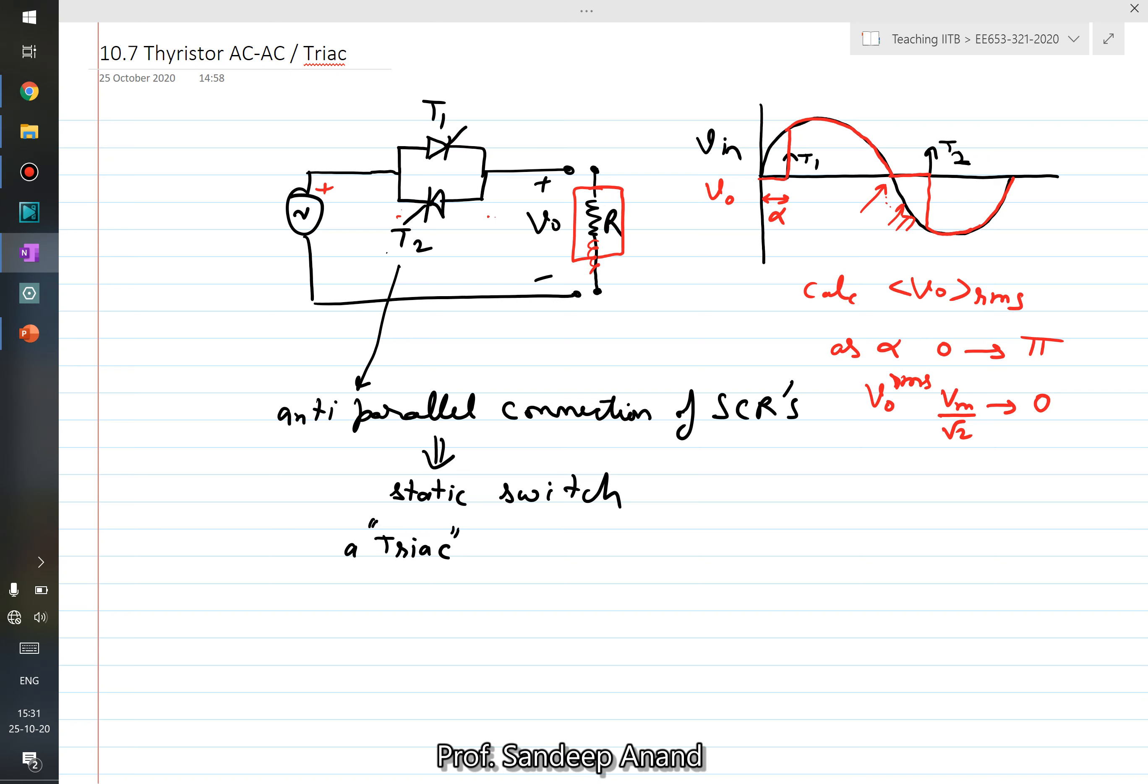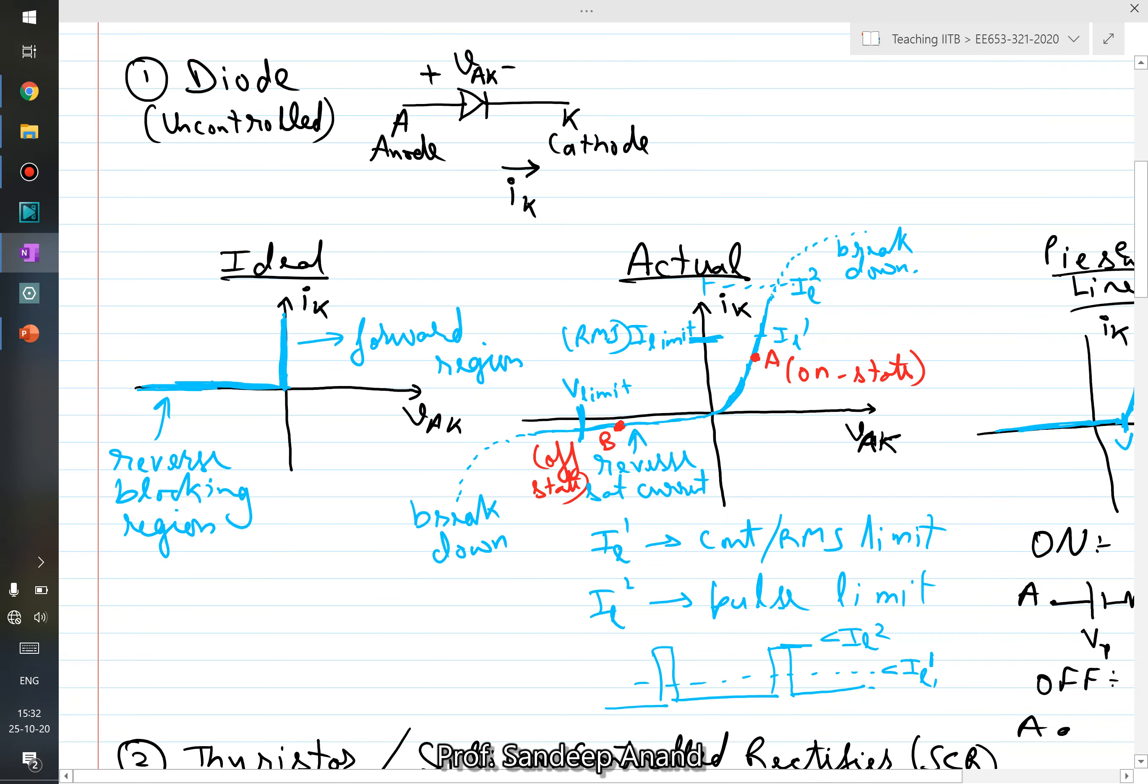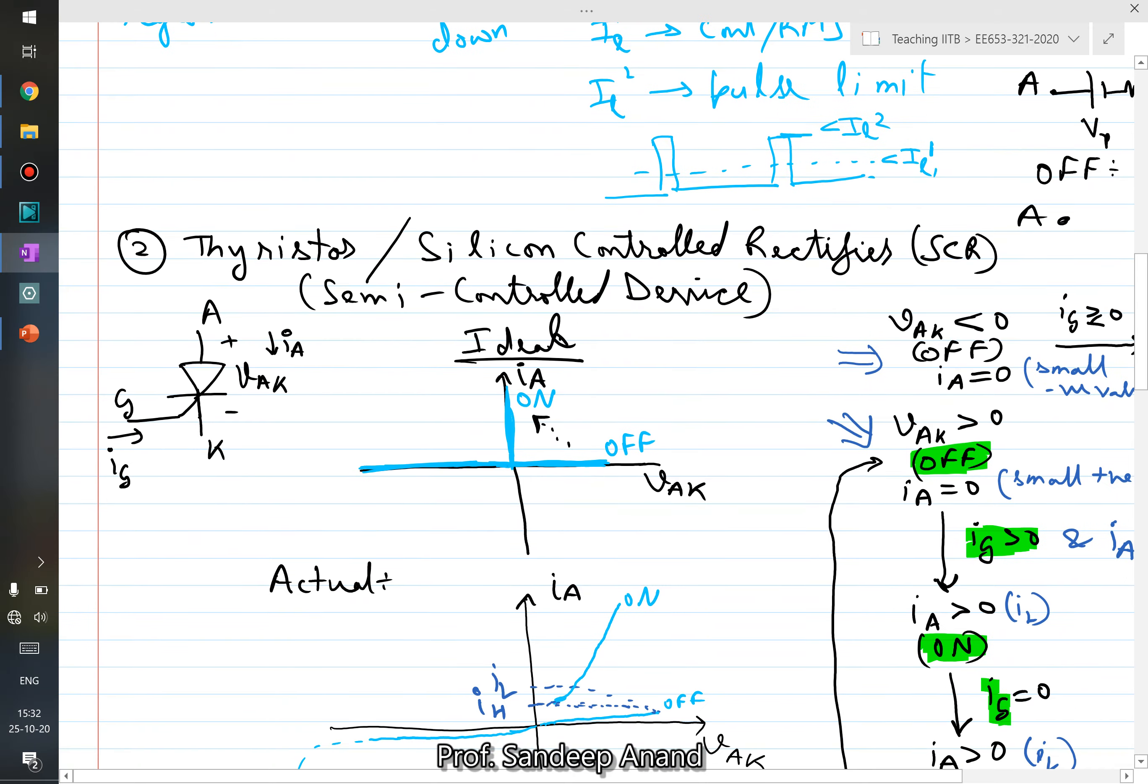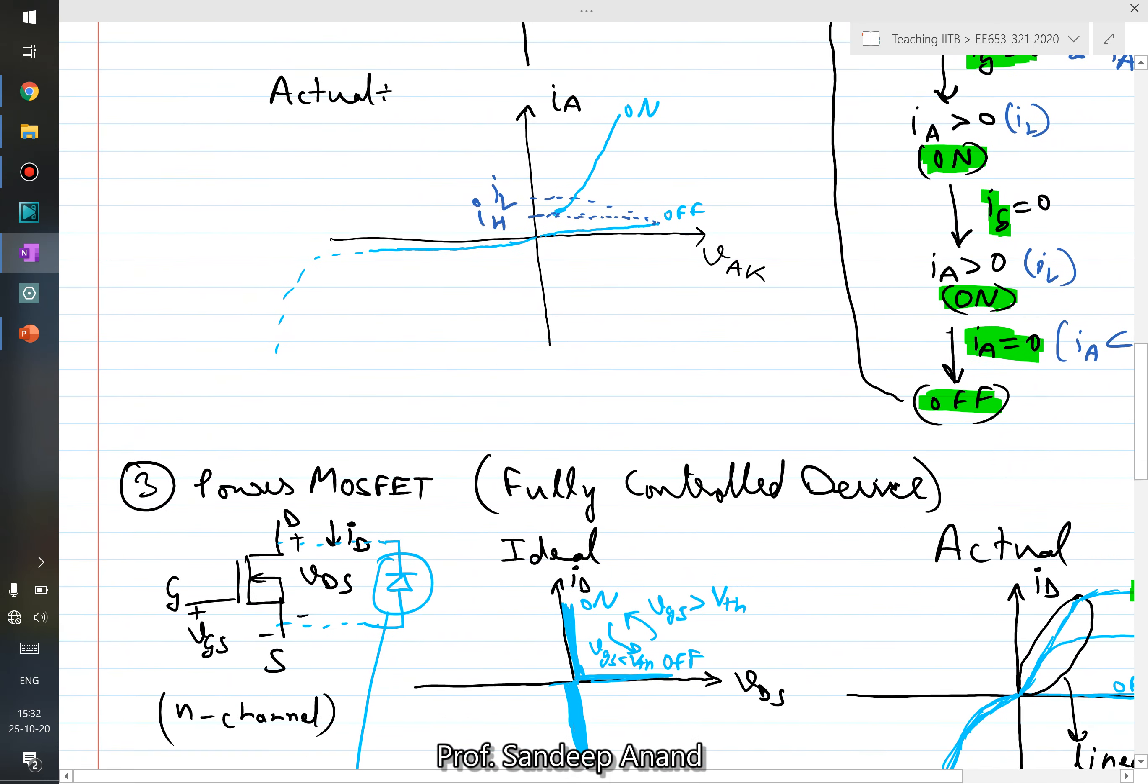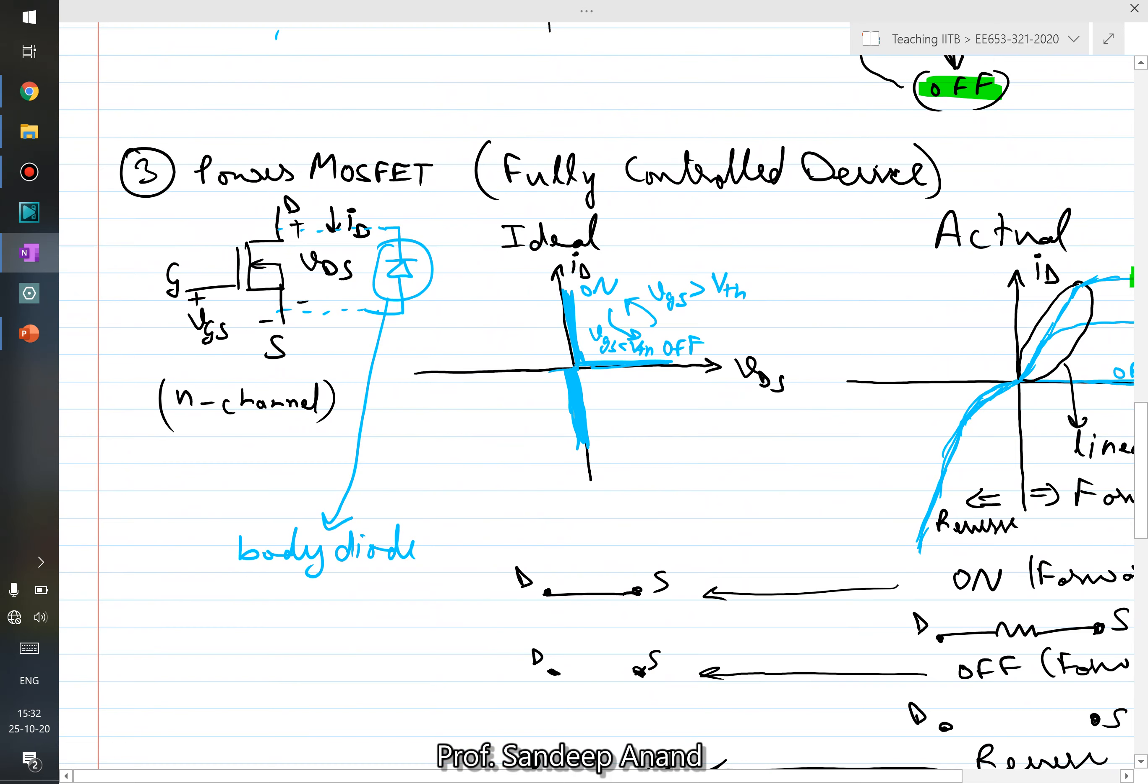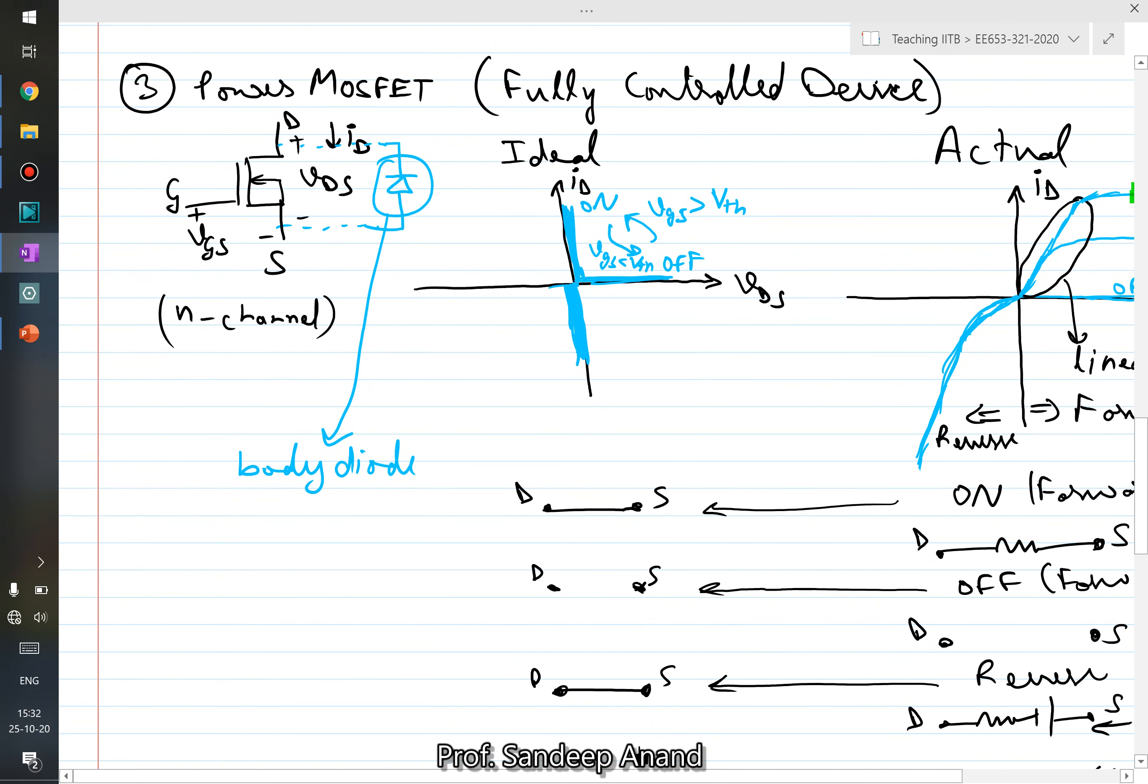Okay, so this was all about thyristor-based rectifier circuits and we have talked about the thyristor-based AC to AC circuit also here. Now we would talk about, if you see our original discussion which we had in the beginning wherein we saw that there were different types of semiconductor devices. If you remember there was a diode, now diode we have been using extensively till now. Then there was thyristor which in this chapter we saw a lot of examples of thyristor-based circuits, and then next is the MOSFET or rather a fully controlled device which could be either a MOSFET or an IGBT or some other device. So now we would see some of the circuits which essentially utilizes these fully controlled devices.